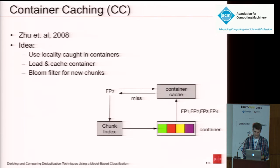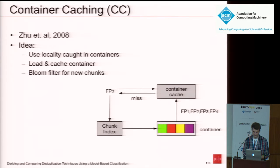Container caching is one system which works with containers. The idea is simple: cache the metadata part of the containers, and for each new incoming chunk fingerprint, first check this container cache for an entry. If not found, check the chunk index, and if it has an entry, get the container, read it, and put the metadata into the cache. This works pretty well — in our evaluation it generated a hit ratio of more than 99%. However, it doesn't work for new chunks, since new chunks are guaranteed to miss the cache and always hit the chunk index. Therefore, the authors included a bloom filter to filter out these accesses.